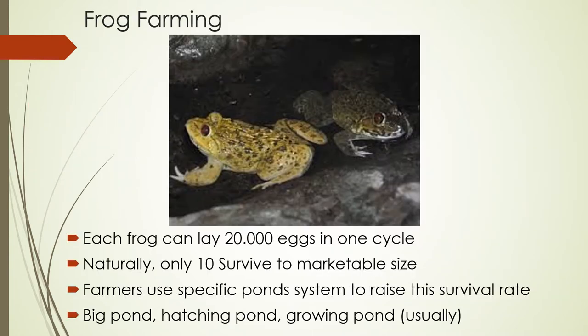In this slide I'm going to talk about frog farming. Each frog can lay up to 20,000 eggs in one cycle, so it can be farmed quickly. However, in nature only 10 of these 20,000 eggs survive to marketable size. Farmers use specific pond systems to raise the survival rate from only 10 up to maybe thousands. To farm the frog, farmers usually use a big pond for mature frogs, a hatching pond for the eggs, and a growing pond for the tadpoles. In the growing pond, the tadpoles are separated into smaller groups because the tadpole is cannibalistic.